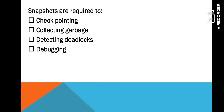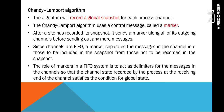What are the uses of these snapshots? These snapshots are used in the process of checkpointing. They are used in the process of garbage collection, they are used to detect deadlocks, and they are used to debug the program.